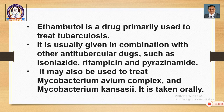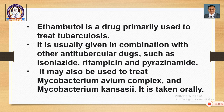Ethambutol is a drug primarily used to treat tuberculosis. It is usually given in combination with other anti-tubercular drugs such as isoniazide, rifampicin, and pyrazinamide. It may also be used to treat Mycobacterium avium complex and Mycobacterium kansasii.